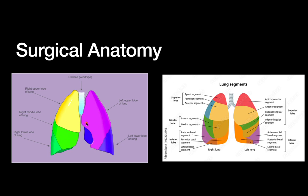Those lobes are divided into segments — there are 19 segments total: 10 segments on the right side and 9 on the left side. Not all segments are shown in a single picture because it's 3D anatomy.